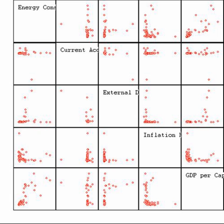Descriptive statistics can be used to summarize the population data. Numerical descriptors include mean and standard deviation for continuous data types like income, while frequency and percentage are more useful in terms of describing categorical data like race.